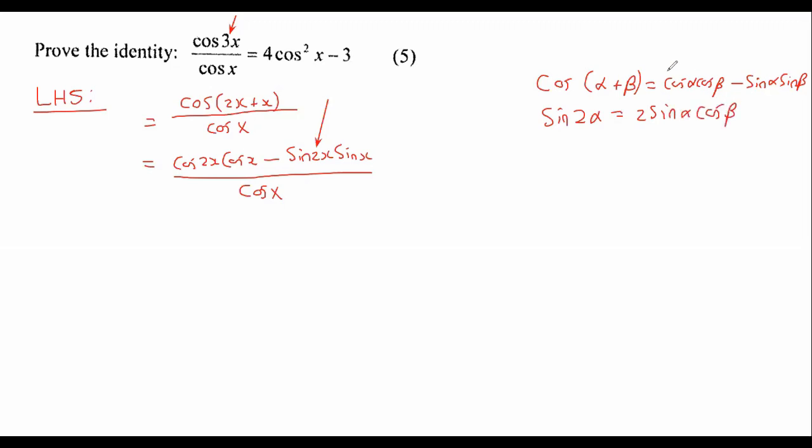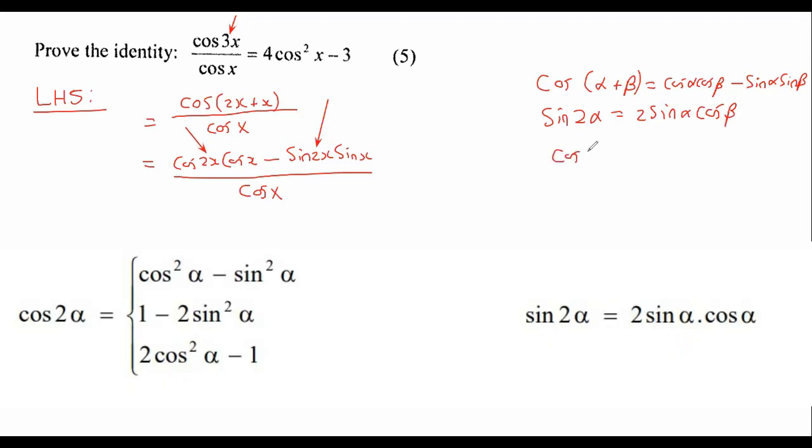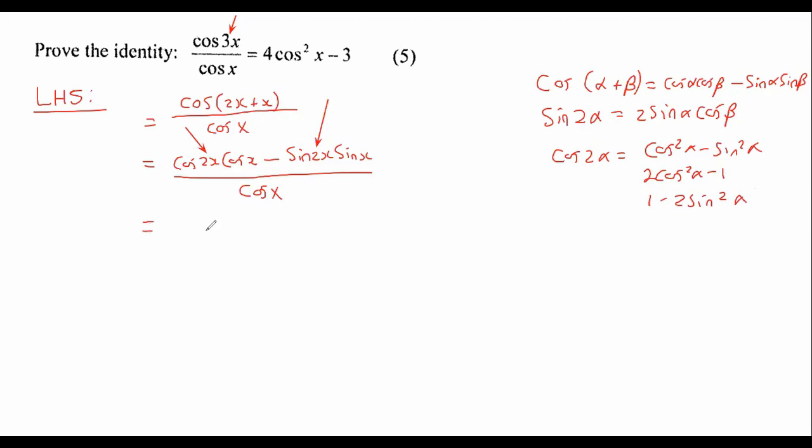The one that is a bit more difficult is cos 2x. Why? Because cos 2x can become three different things, right? It can become this, it can become this, and it can become this. So I would say leave that one alone for now. Don't change that one just yet.